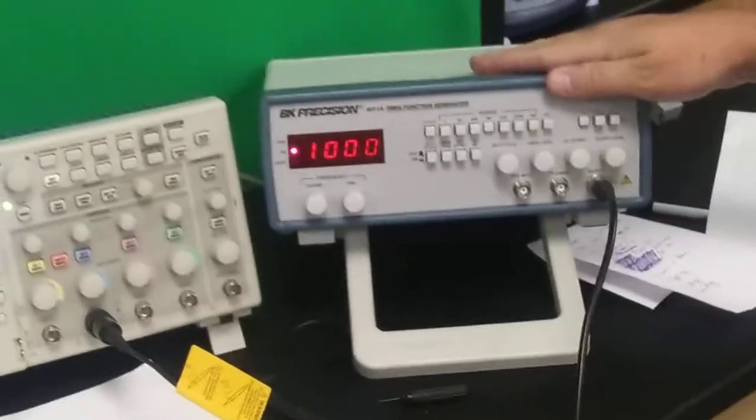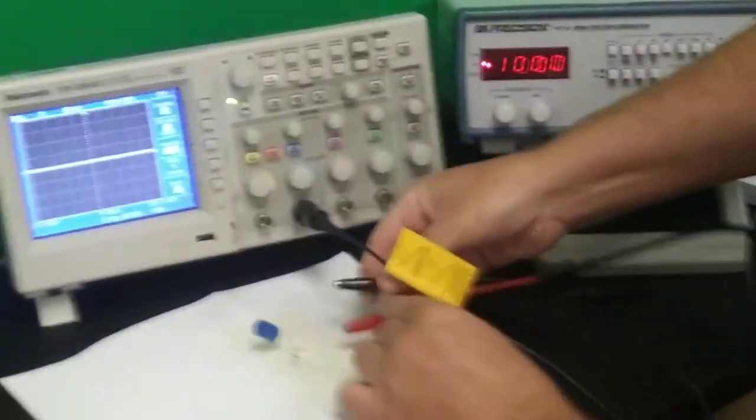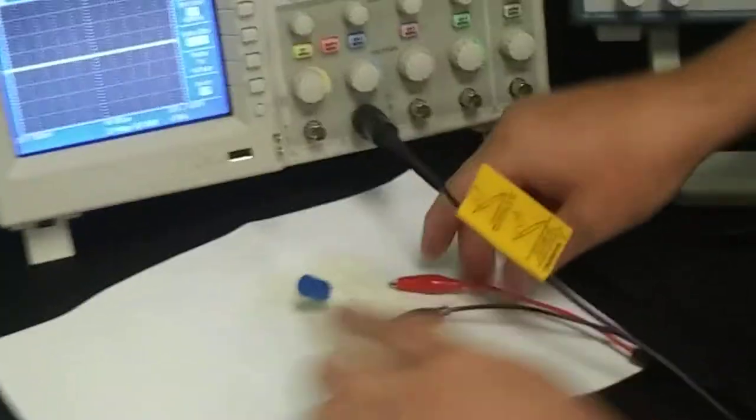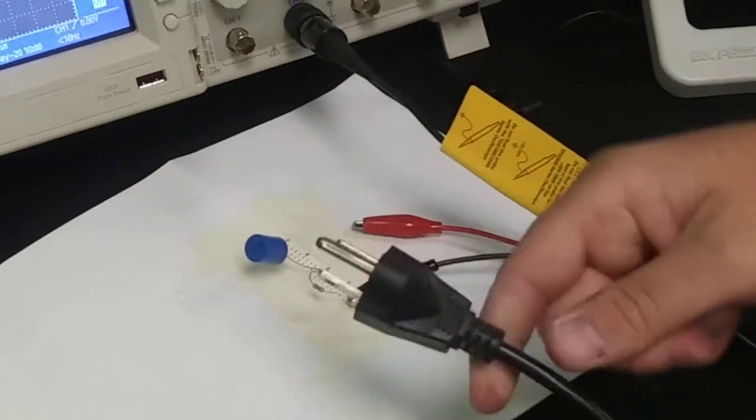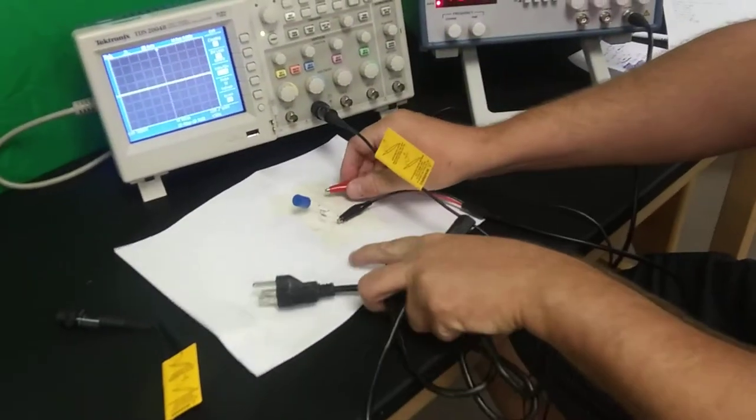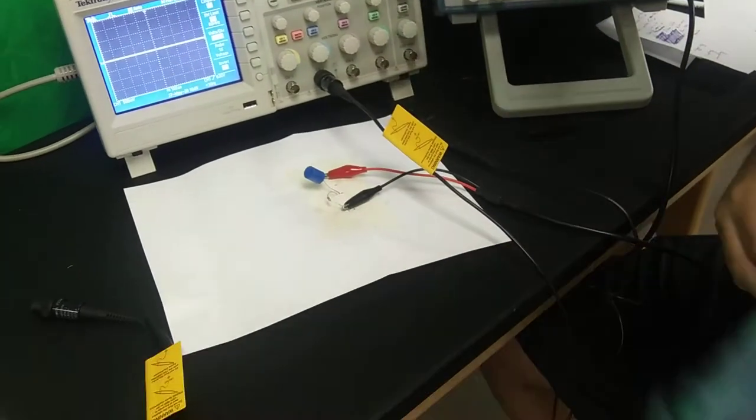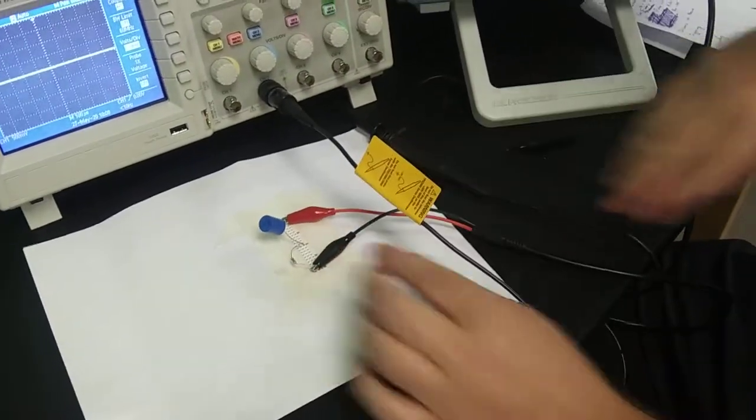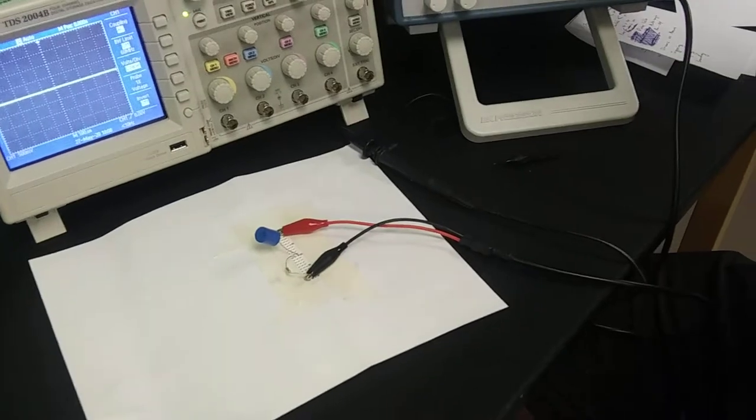I've got a function generator that's going to put an AC signal, alternating current signal into here, and so I'm going to go ahead and connect this. This black clip is actually connected to the ground, so you know in an electrical cable, you plug it in like this, there's the three-prong. So we've got this black is connected to ground, and there this red is connected to hot.